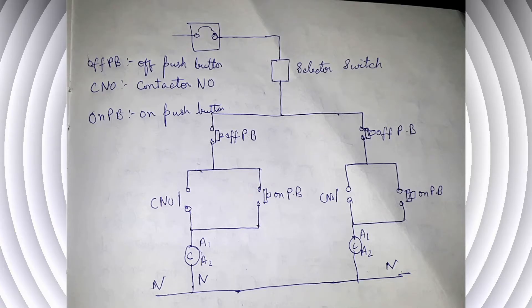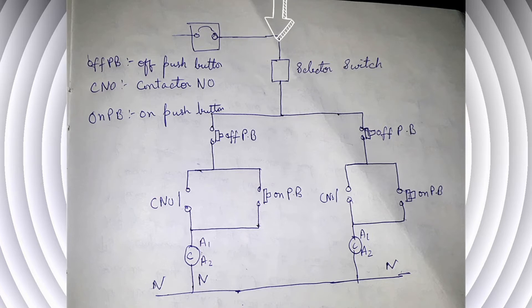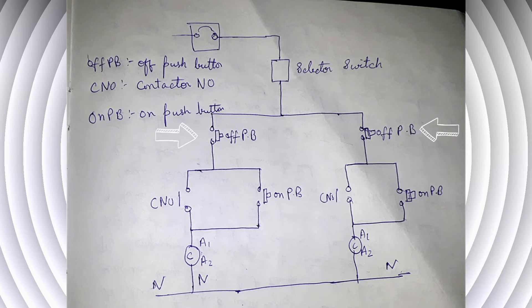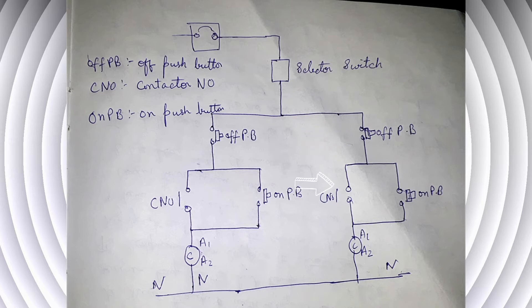Now I am explaining the control circuit of this DOL starter — this is an extra part of the video. From the 6-ampere single pole circuit breaker we connect to the selector switch, and from the selector switch to pump 1 and pump 2. For pump 1: from selector switch to the OFF push button, then from the OFF push button two wires are taken — one connects to the contactor NO and another to the ON push button. From the ON push button, one wire connects to the NO of the contactor and another to A1 of the contactor.